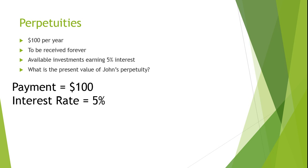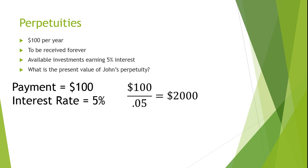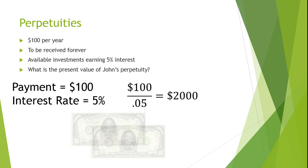Let's plug in our figures to the formula to solve the present value of a perpetuity. Since John is to receive $100 annually for the rest of his life, and there are available investments earning 5%, which is our discount rate, we simply divide $100 by the interest rate to find the present value. Therefore, John's perpetuity has a present value of $2,000.